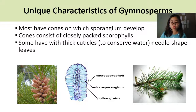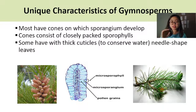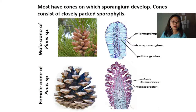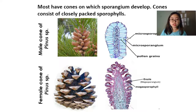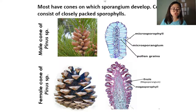Another point is that some gymnosperms have thick cuticles because of water conservation, and they have needle-shaped leaves. Imagining the pine tree again — the pine tree has leaves that are narrow and tapered like this, and they are covered with a layer of cuticle so that they do not dry out quickly.